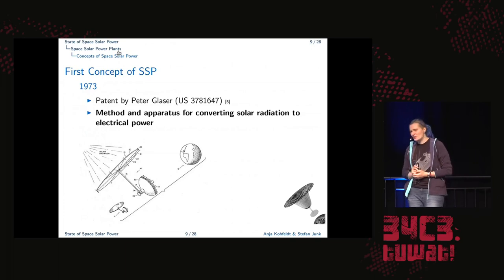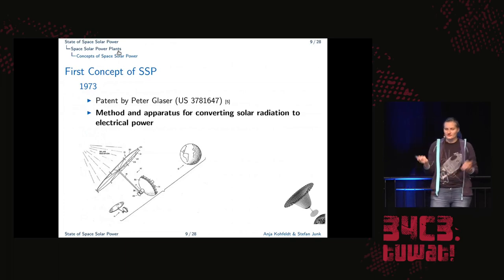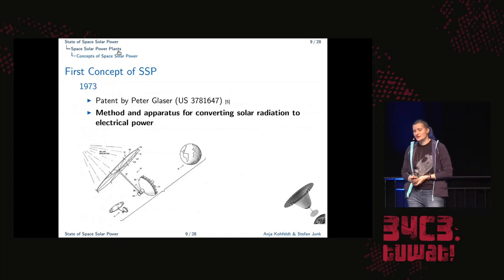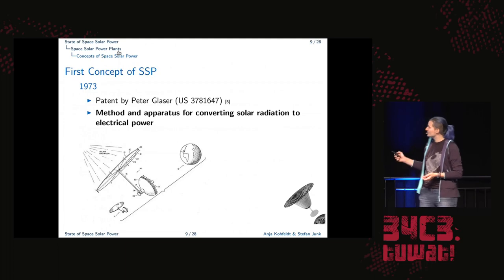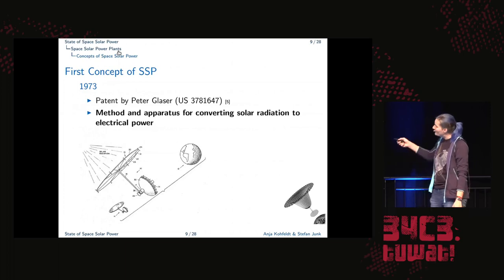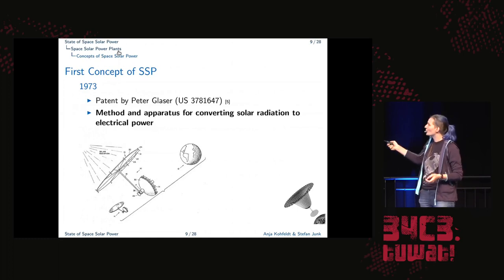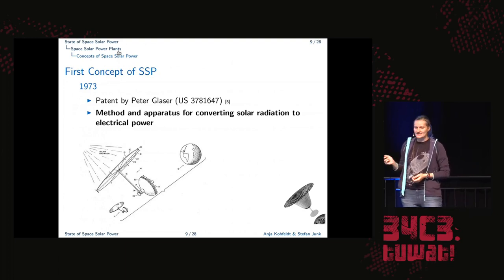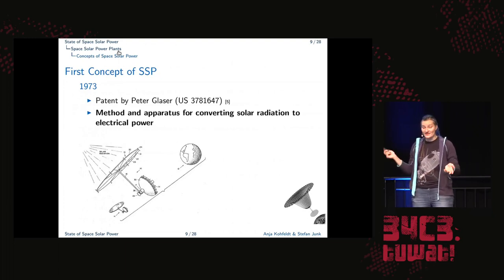This concept of space solar power actually isn't that young. There's a patent from Peter Glaser from the 70s who already proposed a method and apparatus for converting solar radiation to electrical power. And here you see, there's a small red spot, I'm not sure whether you can see that. But you already see that he introduces all the components that are in need. Of course, we need the earth, we need some large area for solar, for sun collection, and we need some antenna in order to transmit this power. Since the 70s, these concepts were actually discussed all along.